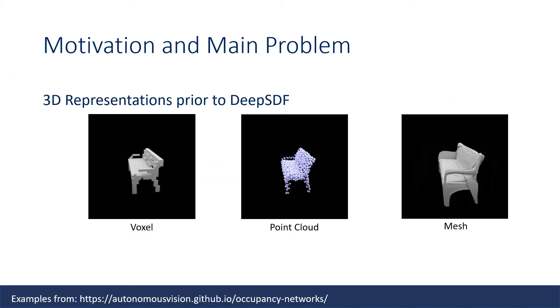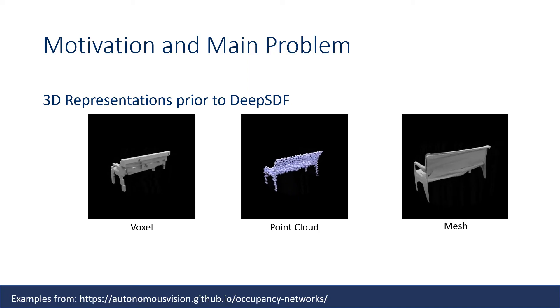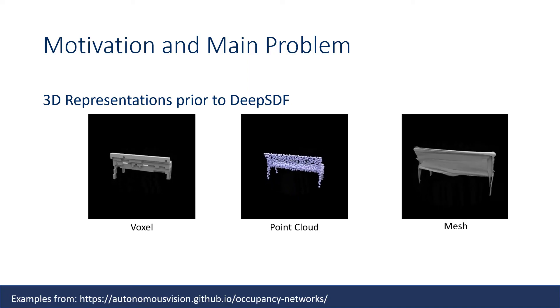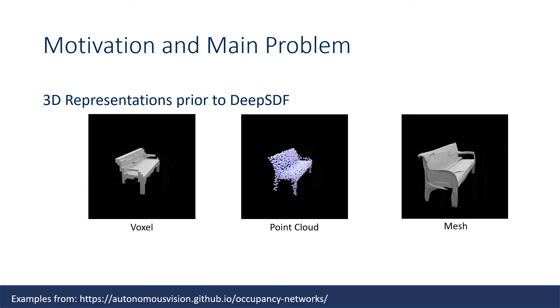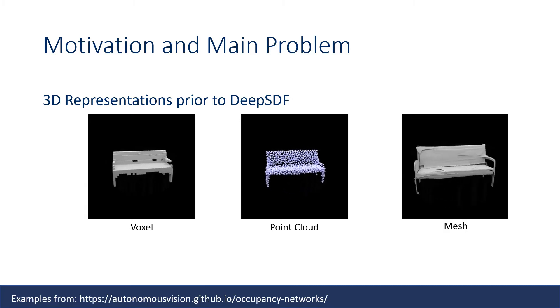Before the Deep SDF and other implicit representations came out, the dominant representations could be categorized into three categories: voxels, point cloud, and mesh representations.